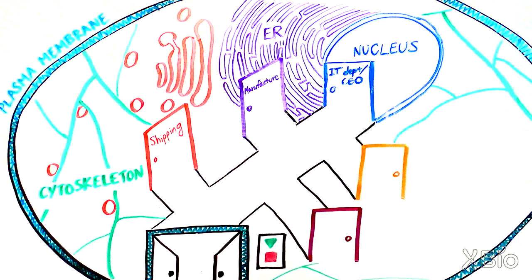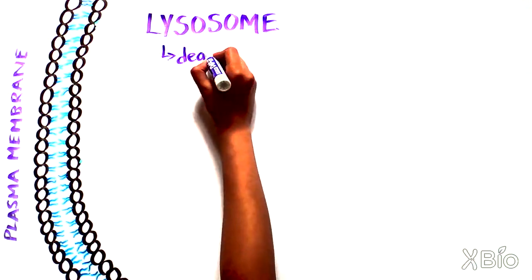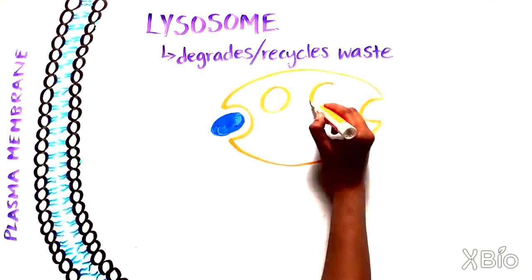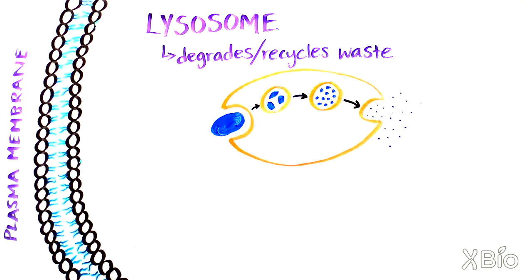In addition to making new products, cells also have to get rid of expired products. The main waste disposal department is an organelle called the lysosome, which can degrade or recycle waste.